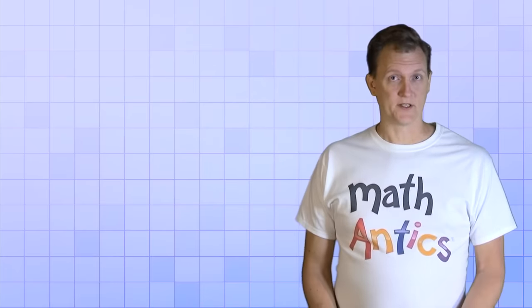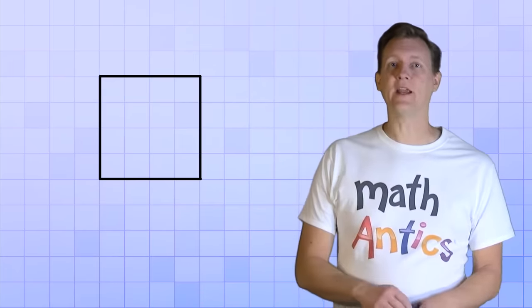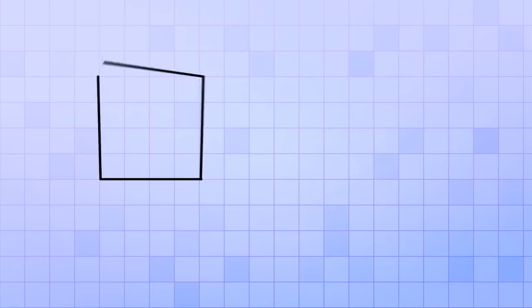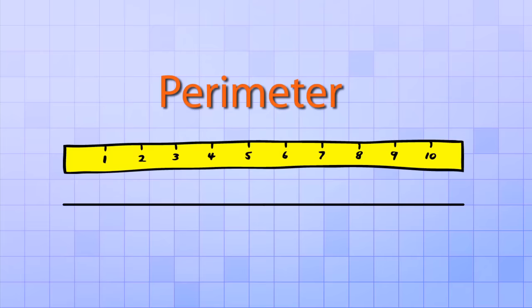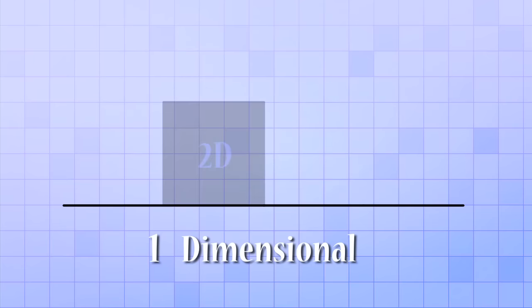Another good way to see what perimeter is, is to imagine that you could take a shape, like this square, and break it at one of its corners. Then you could unfold the shape until it formed a straight line. The length of that line is the perimeter of the shape. Doing this helps you understand why perimeter is a one-dimensional quantity, even though it applies to two-dimensional shapes like this square. It's one-dimensional because it's the distance of the lines that go around the two-dimensional shape.